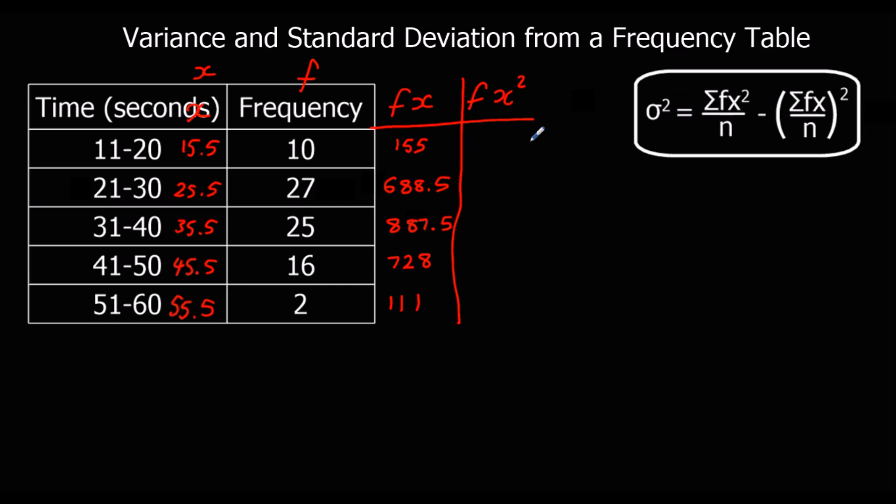And then we're going to work out fx squared, which is f, the frequency, times the midpoint squared. So just the x is squared, not the whole thing. It's not this fx squared. That would be f squared x squared. We're going to do f, so 10 times 15.5 squared. f times x squared. And we're going to use a calculator again.